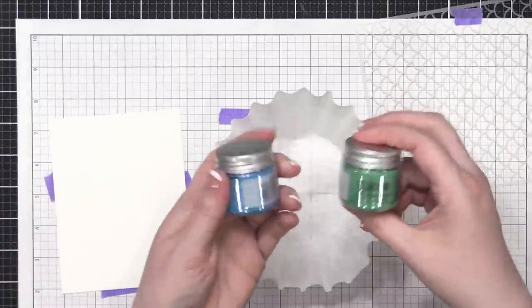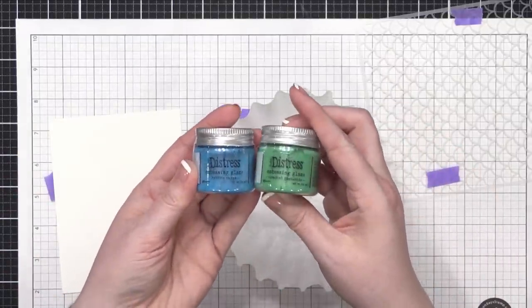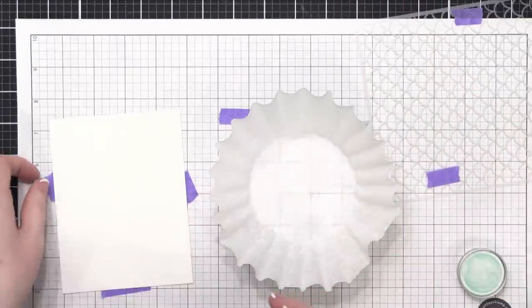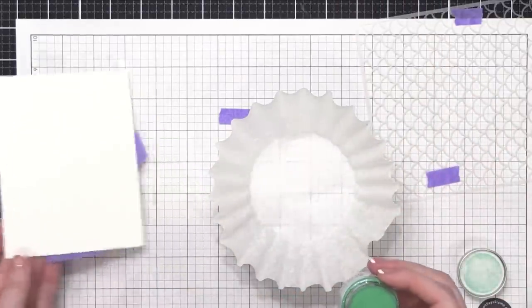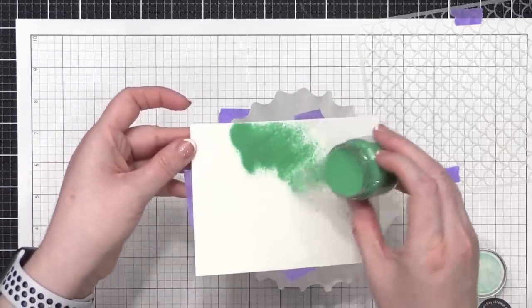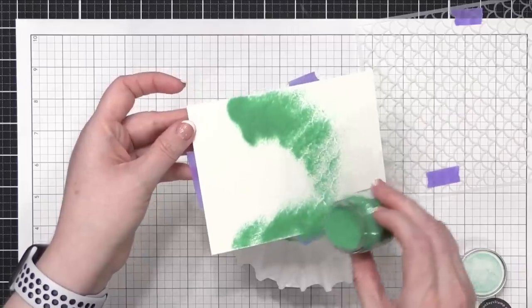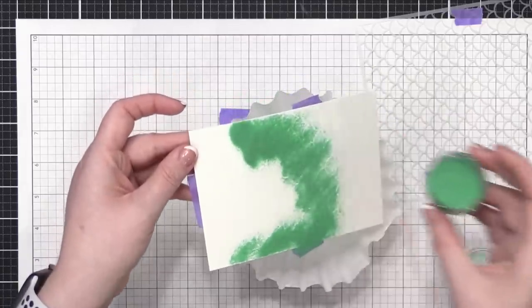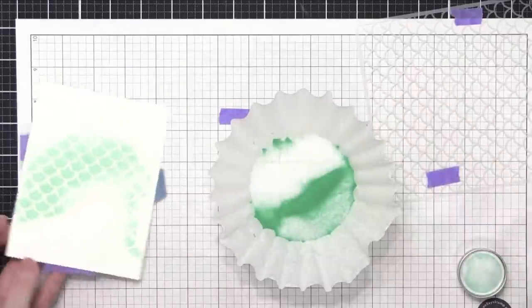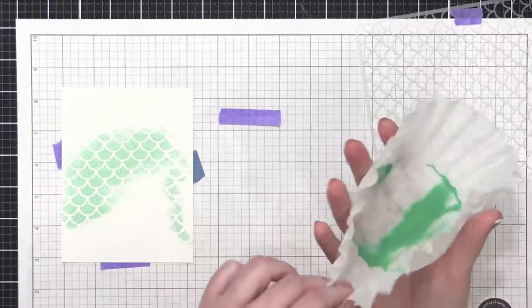Peeled up that stencil and now I'm going to be using two different colors of Distress Embossing Glaze. I've got the colors Broken China and Cracked Pistachio. Starting with Cracked Pistachio and I'm going to have this kind of near the middle and to the top of the embossed area on my card. And then I'm going to be sprinkling on some of that Broken China color. I wanted two different colors here so it has a little bit of an ocean flavor, almost like the scales are iridescent in the light, something like that.